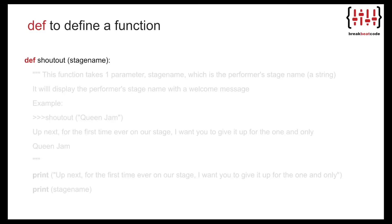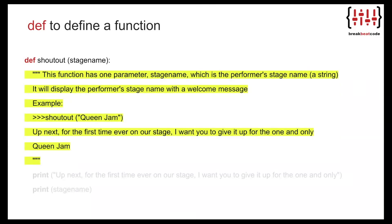In parentheses we have the parameters. Remember, parameters are like the ingredients that we need for our recipe — in the same way that we need different toppings like cheese for creating the pizza. We have named our own function 'shout_out'. This function takes one parameter, stage name, which is the performer's stage name — a string.